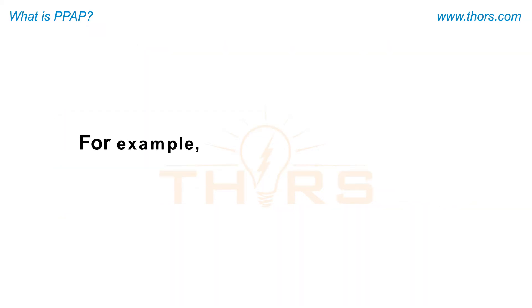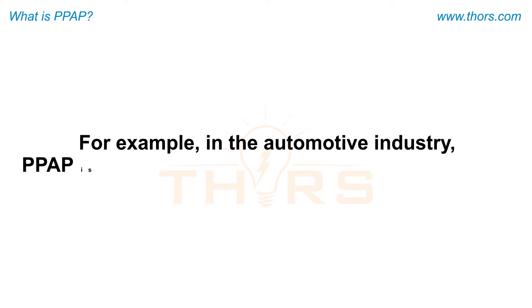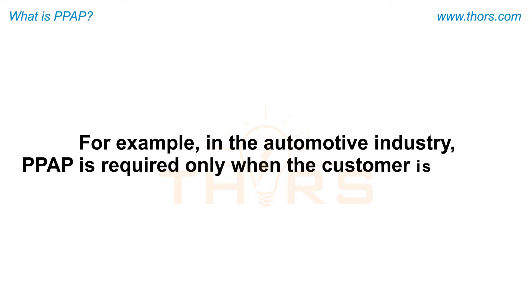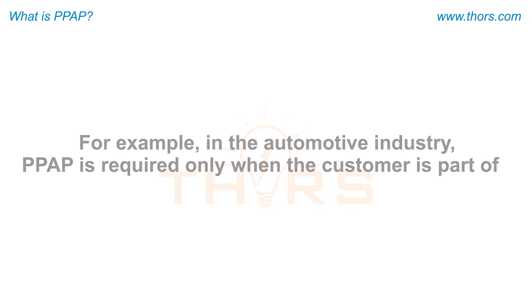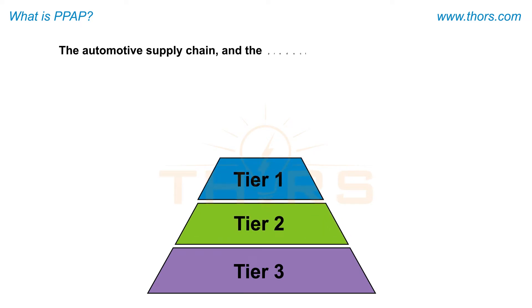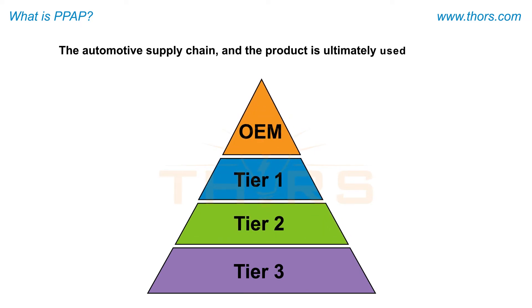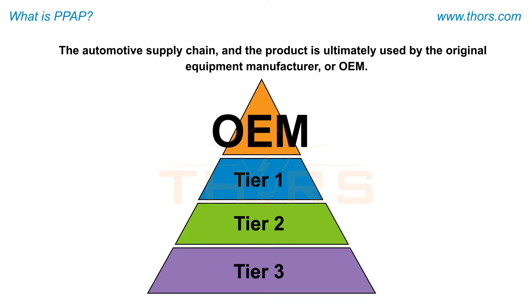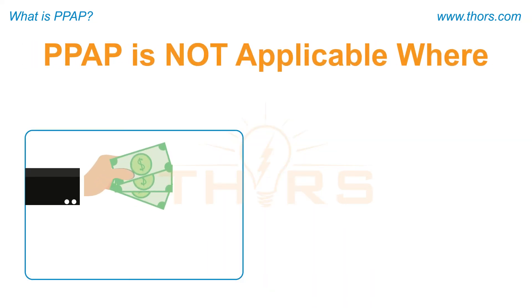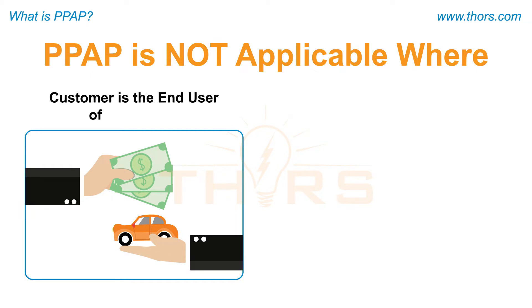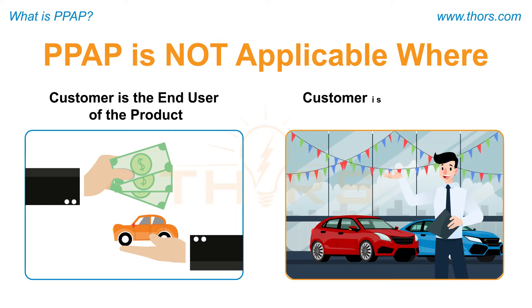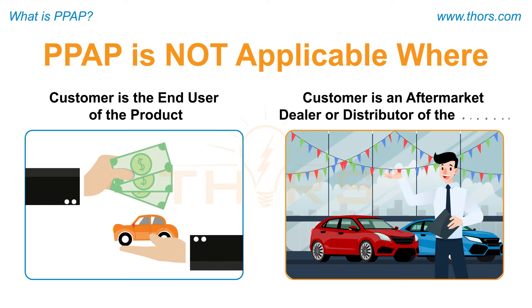For example, in the automotive industry, PPAP is required only when the customer is part of the automotive supply chain and the product is ultimately used by the original equipment manufacturer, or OEM. However, PPAP is not applicable in a situation where the customer is the end user of the product, or where the customer is an aftermarket dealer or a distributor of the product.